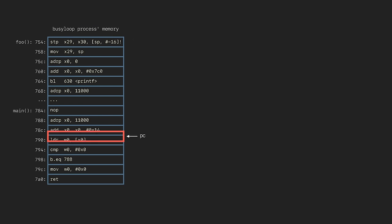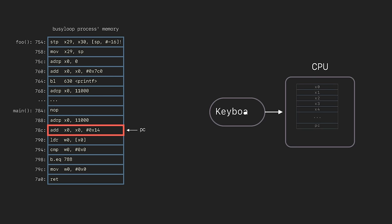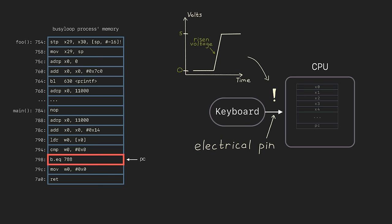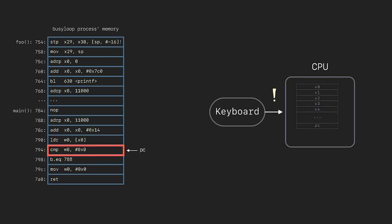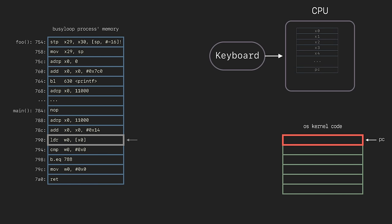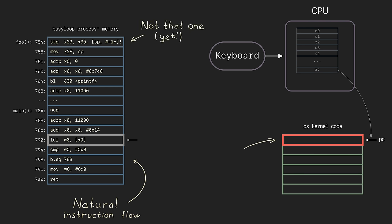Let's try to recall what interrupts are. If a keyboard button is pressed, the operating system wants to know about it. That's why the CPU has electrical pins to be connected to external hardware. Now the keyboard can raise the voltage of that pin and the CPU will immediately detect it. But what happens to our program? The CPU was executing our program, the interrupt arrives, and at this moment the CPU immediately forces the program counter to point to the particular kernel address, which is the interrupt entry. The natural instruction flow is broken and we jumped to another code. It is not the foo function yet, but still very promising.